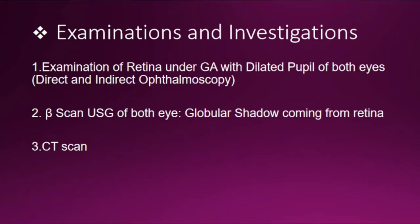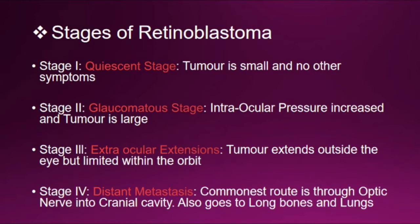Examinations and investigations: examination of the retina under general anesthesia with dilated pupil of both eyes by direct and indirect ophthalmoscopy. B-scan ultrasonogram of both eyes — here you can see a globular shadow coming from the retina. CT scan is also helpful. Staging is a very important topic frequently asked by professors.